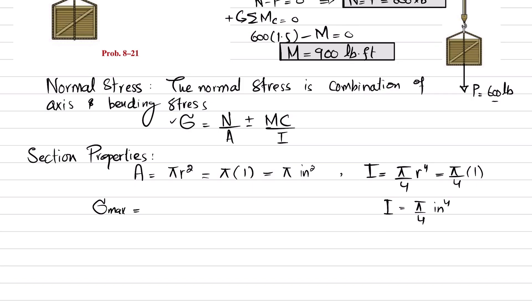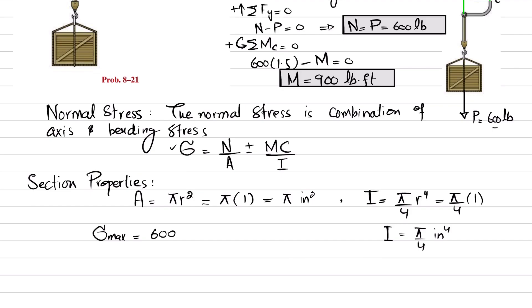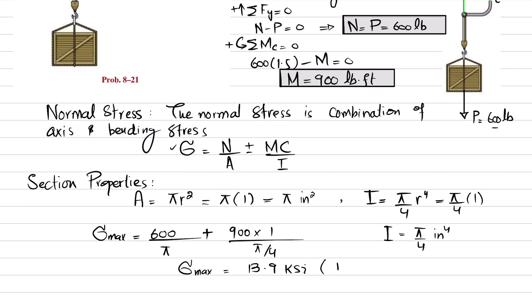Now put these values into the formula to get the maximum stress. Maximum stress equals N over A plus or minus Mc over I: 600 divided by pi, plus or minus 900 times c, where c equals 1, divided by pi over 4. Adding them gives the maximum stress, which comes out to be 13.9 ksi. This is tension.